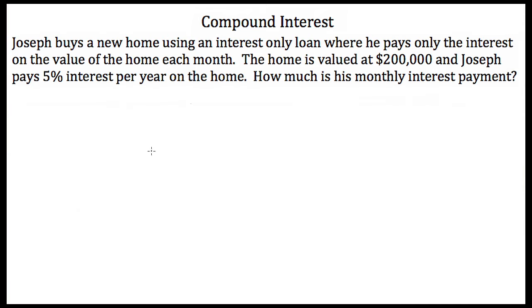Let's look at an example. Joseph buys a new home using an interest-only loan, where he pays only the interest on the value of the home each month. The home is valued at $200,000, and Joseph pays 5% interest per year on the home. So how much is his monthly interest payment? We are going to use our simple interest formula: I is equal to PRT.